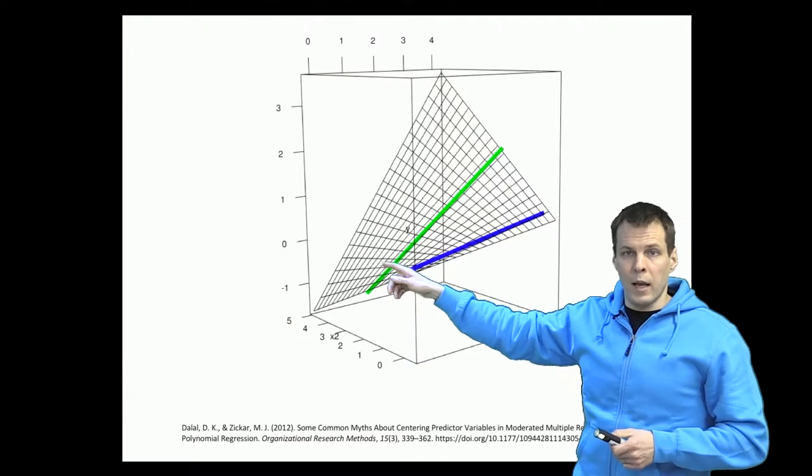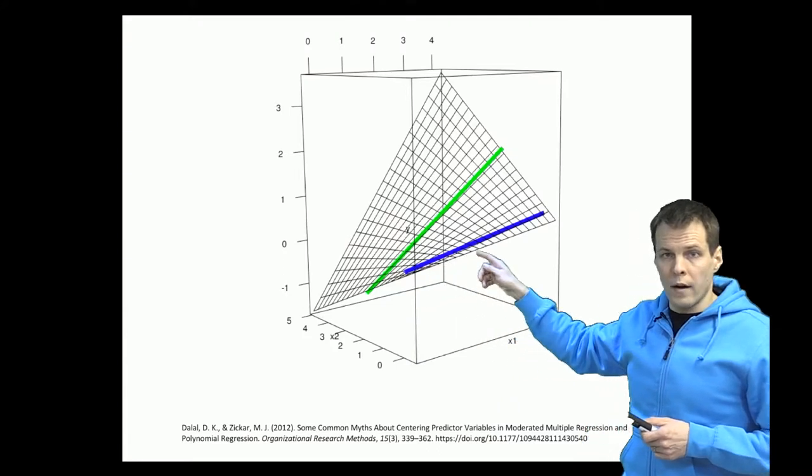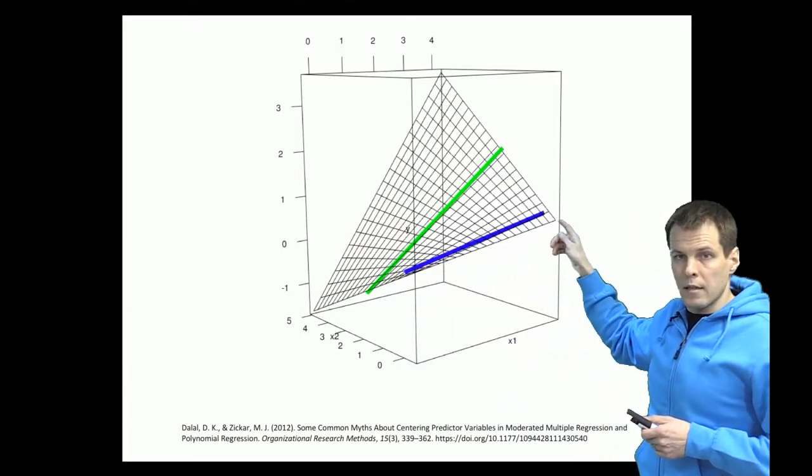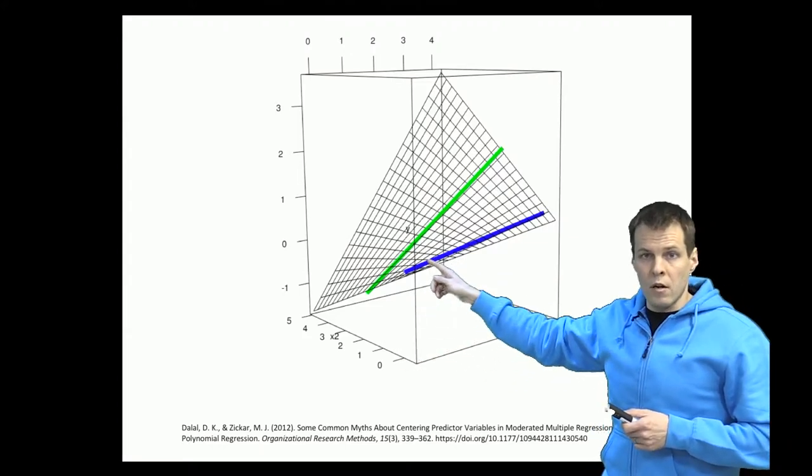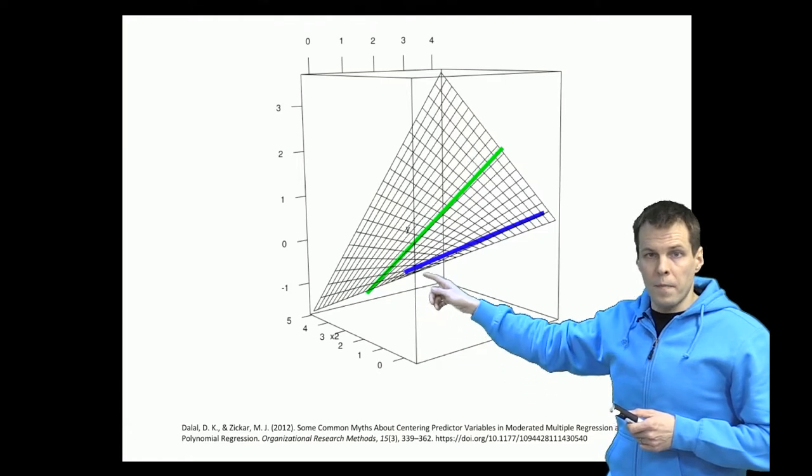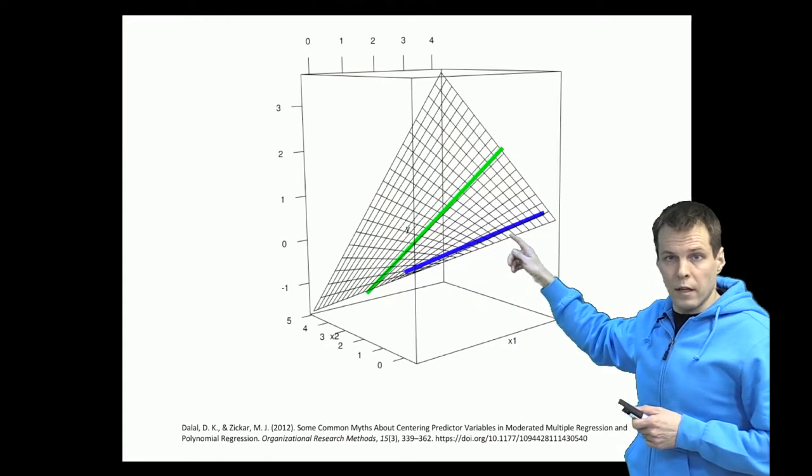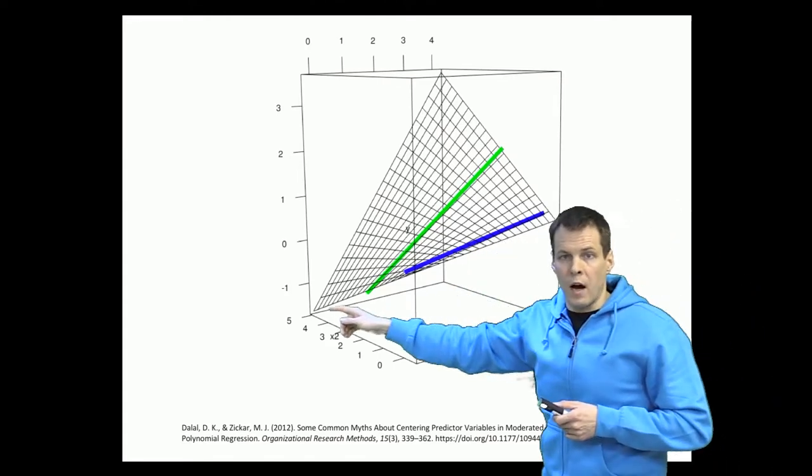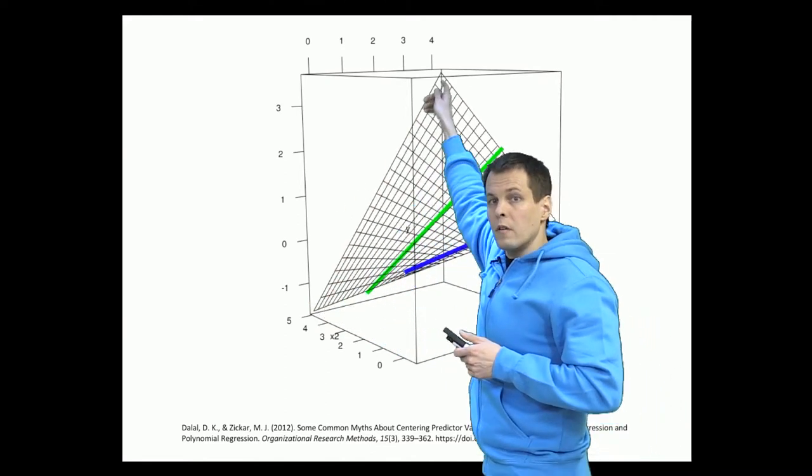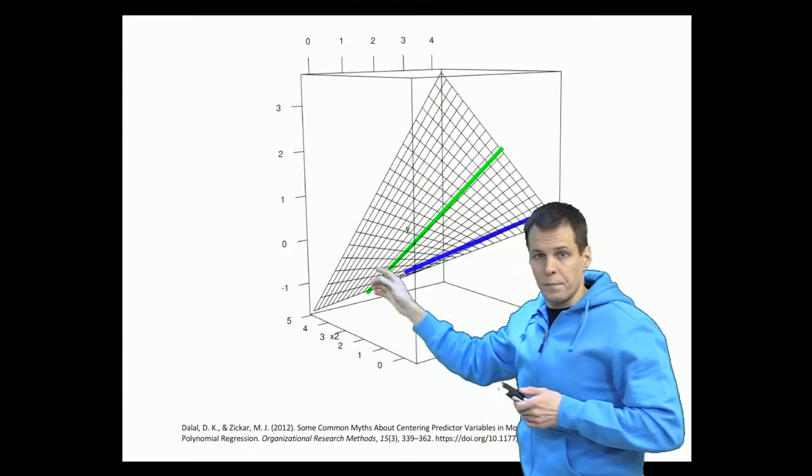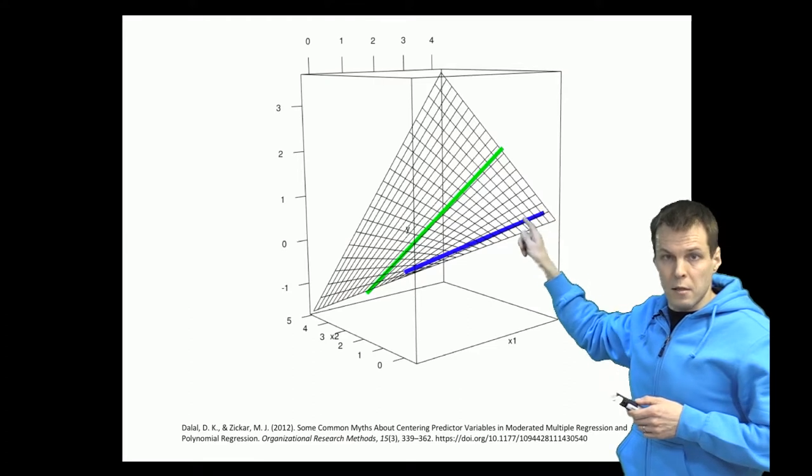And we can see the plane here and because of the interaction the effect of X1 on Y, the strength of that effect is contingent on the value of X2. So here when X2 is at zero then X1 simply increases a little. So the effect is not that great. When X2 is at five the effect is a lot greater. So we see a lot steeper slope here. So the idea is that the regression slope of X1 changes as a function of X2.